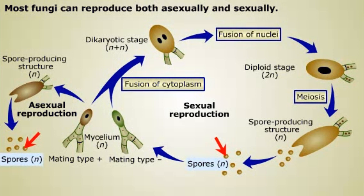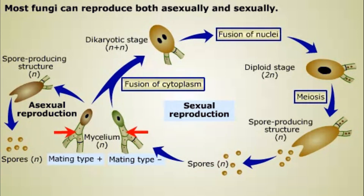Sexual reproduction can occur when individual organisms of different mating types encounter each other. Mating type is a genetic characteristic analogous to the distinction of male and female in plants and animals. But a fungal species may have more than two mating types, and individuals of different mating types usually have no obvious morphological differences. Since hyphae of the same mating type cannot mate, self-fertilization is prevented.